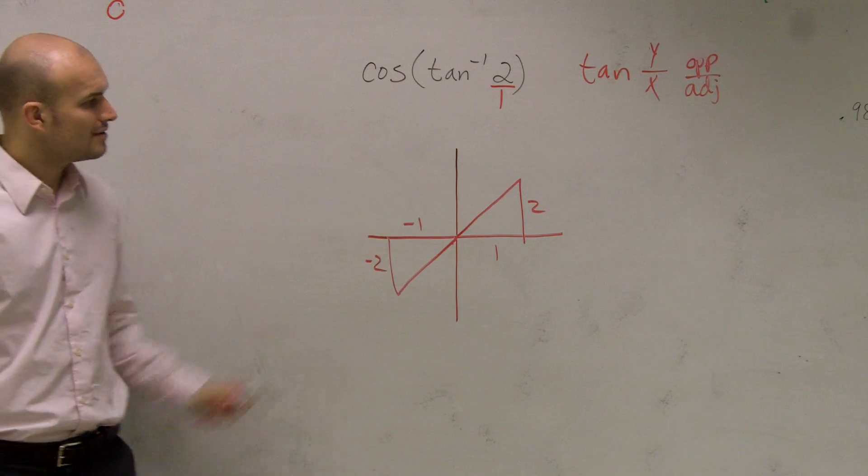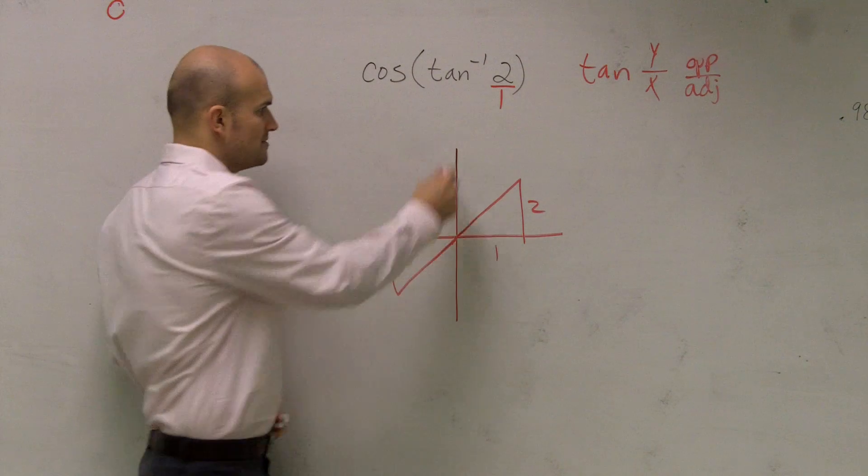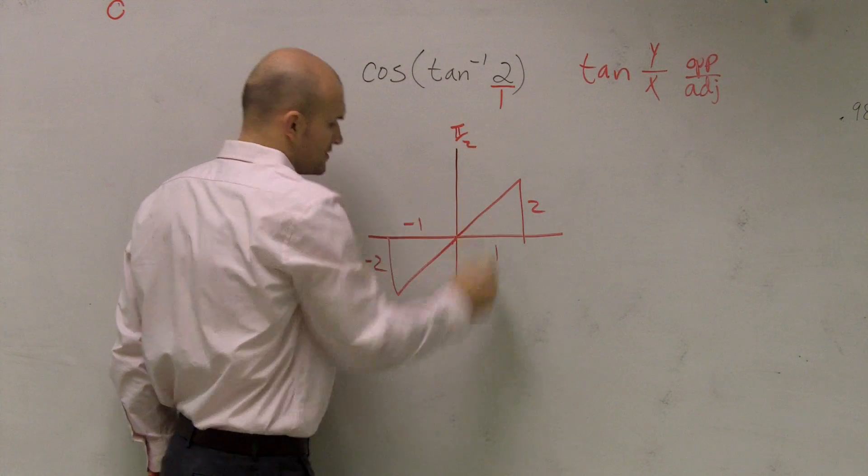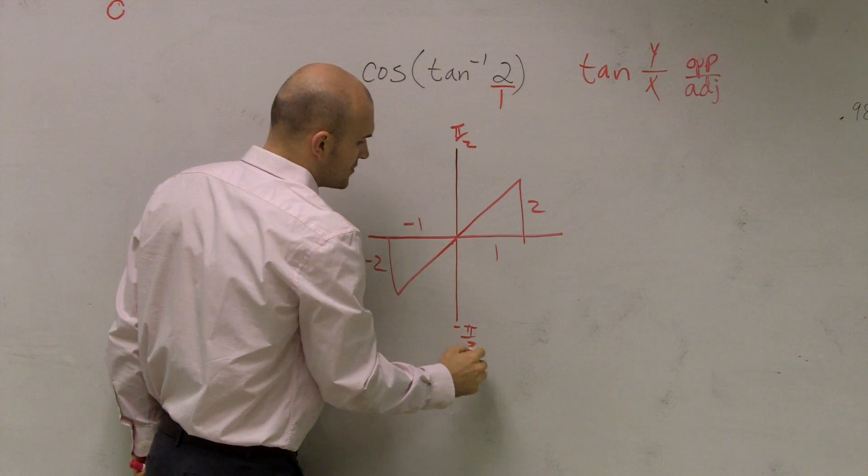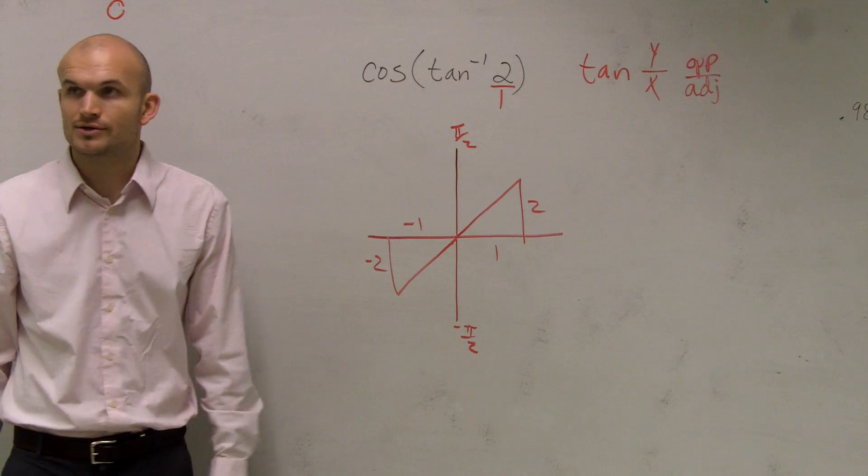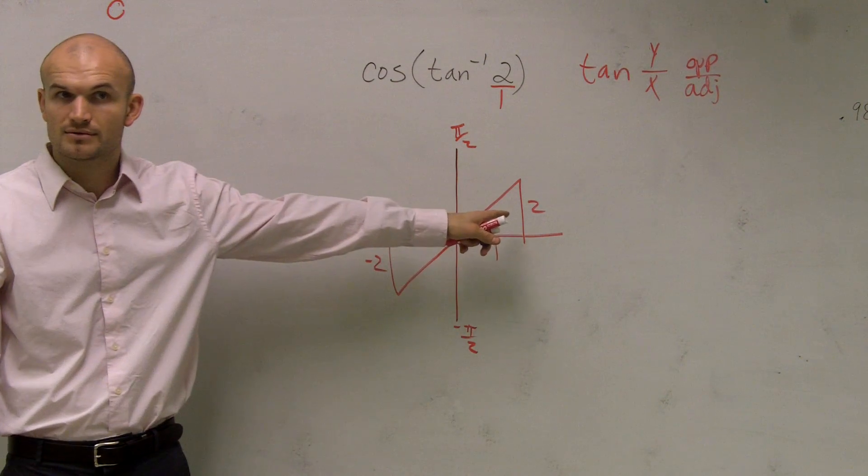Now, remember when we talked about our tangent. Tangent has to be between pi over 2 and negative pi over 2. So, what is really the only triangle we can use? This one, right? Does that make sense?